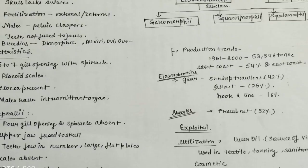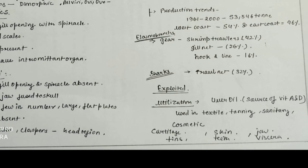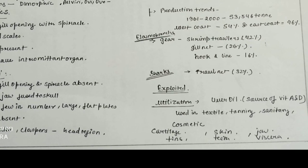In 1961 to 2000, approximately 553,546 tons production was there, and west coast production was 54% and east coast 46%.